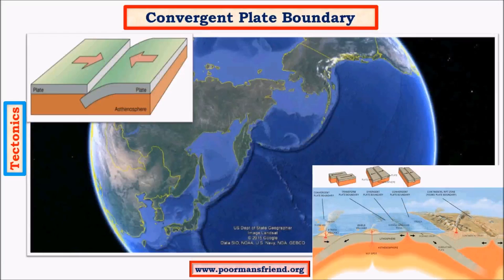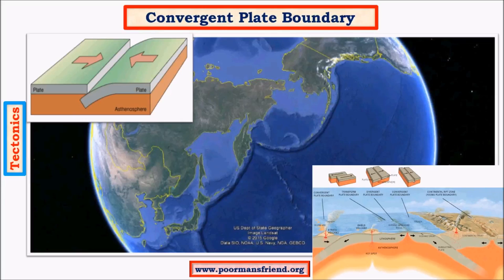Now let us move on to convergent plate boundary. This is how a convergent plate boundary looks when there is interaction between oceanic plates. The most important feature is the formation of trenches. Examples include the Aleutian trench, the Kuril trench, and the Japanese trench. There are different kinds of interaction between convergent plates, and different plates are involved, which we will see in detail.